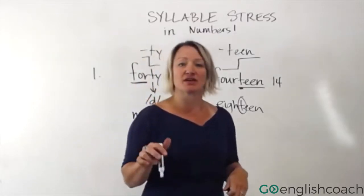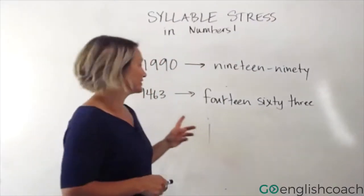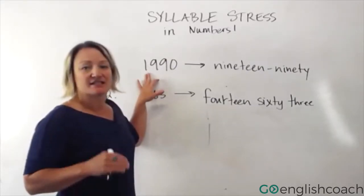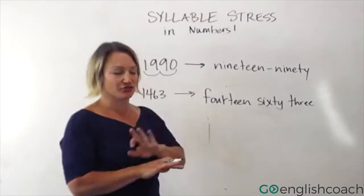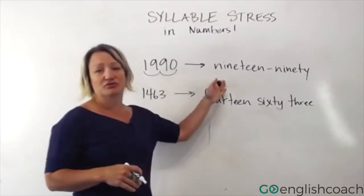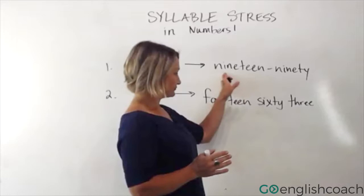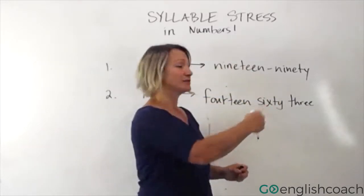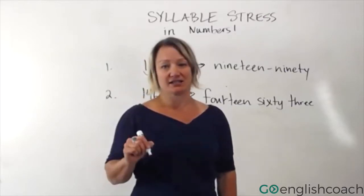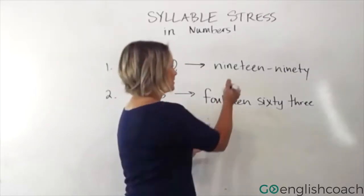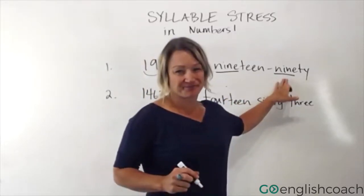Let's do a couple of practices with dates, phone numbers, and years. So I have two years here. We say 1990 — you're grouping those numbers together. I'm not saying 'one thousand nine hundred ninety'; most people just say 'nineteen ninety.' You'll notice the stress on the teens changes a little when there's another word after it — we stress both parts: 'NINEteen NINEty.' 1990.